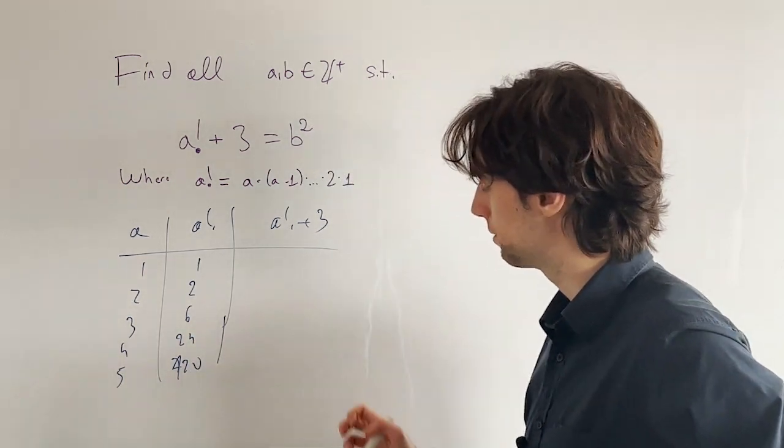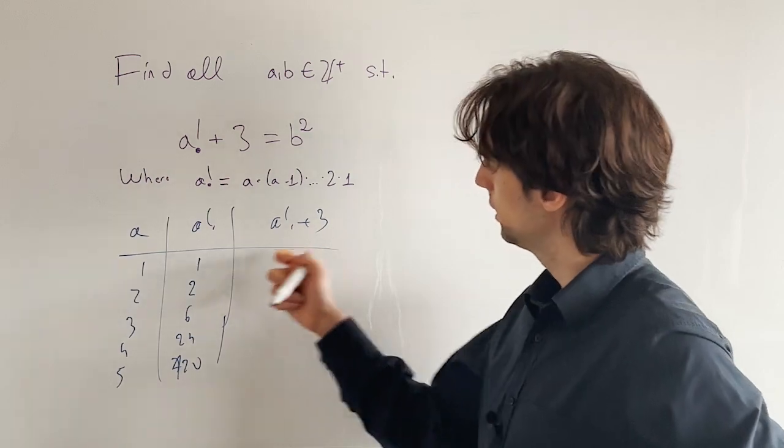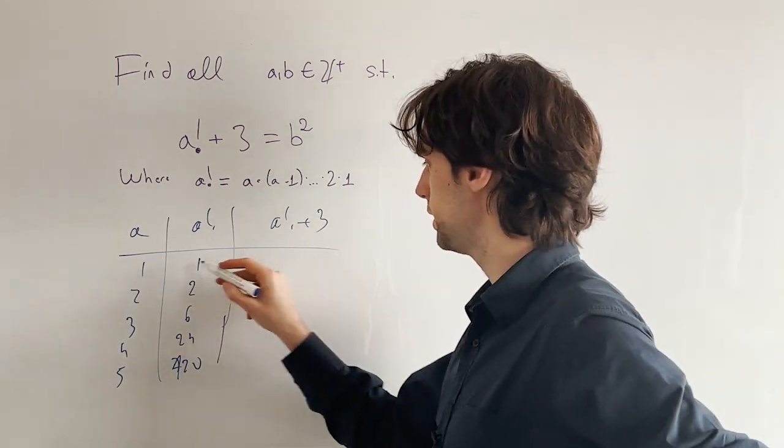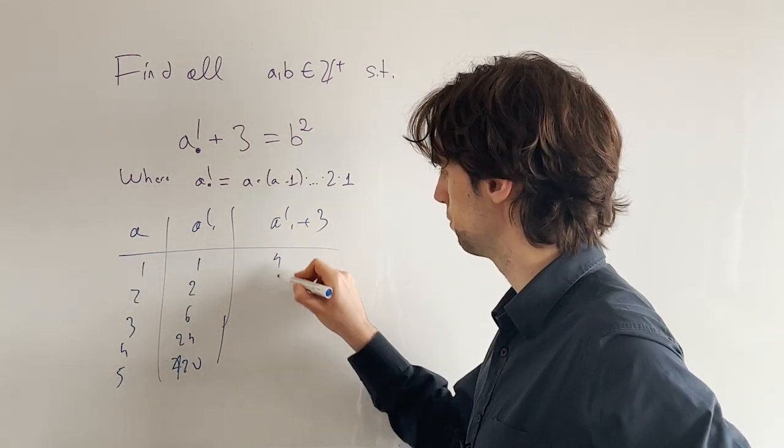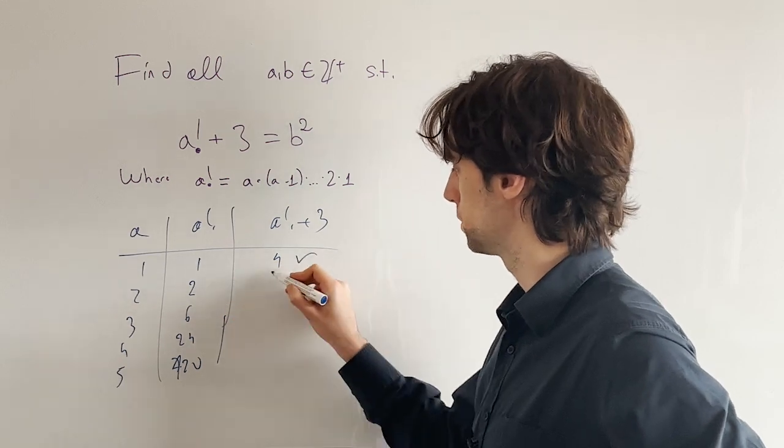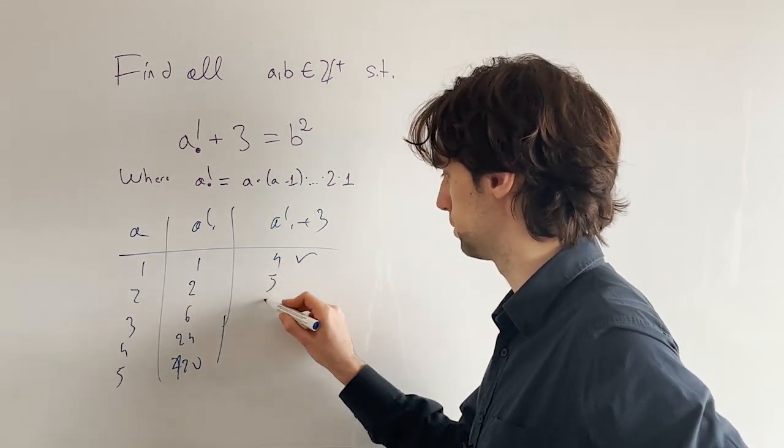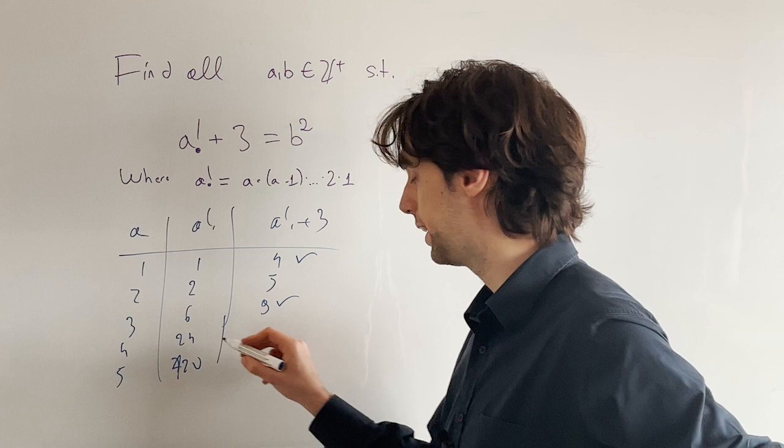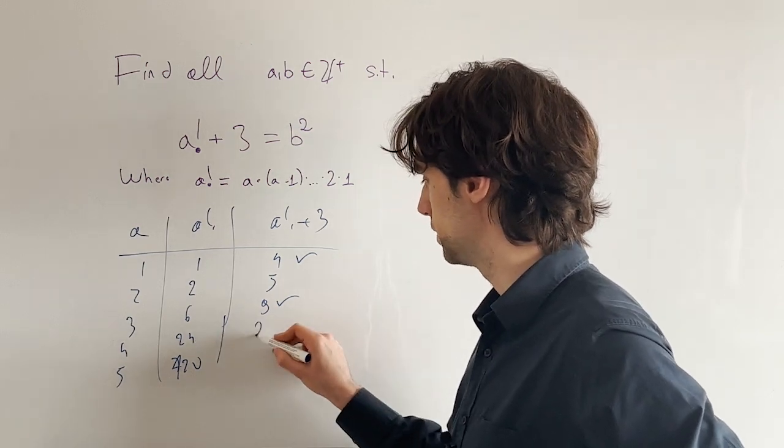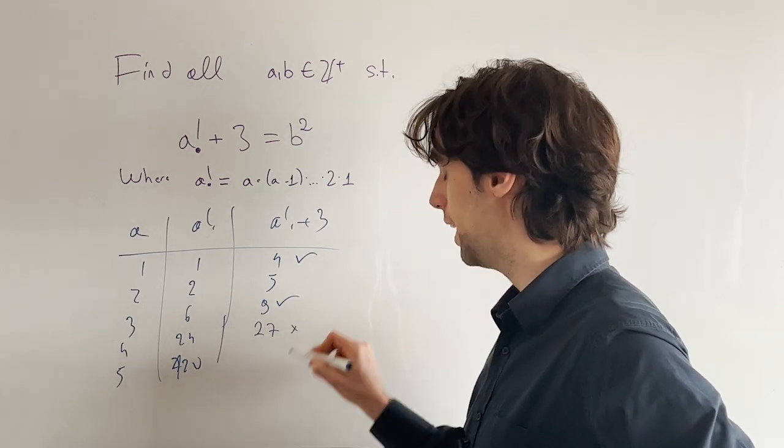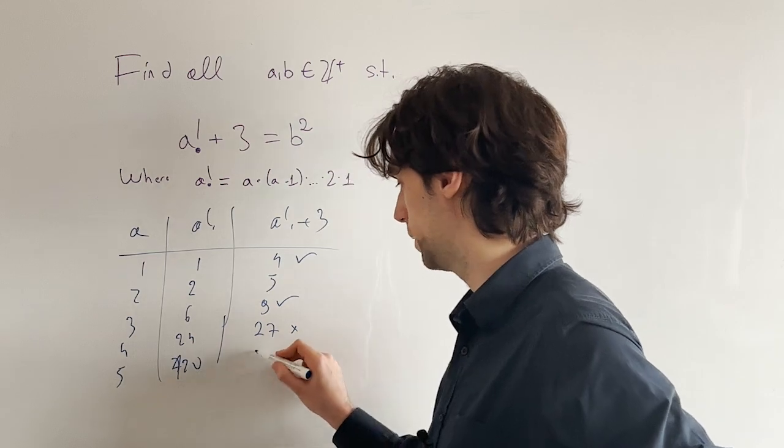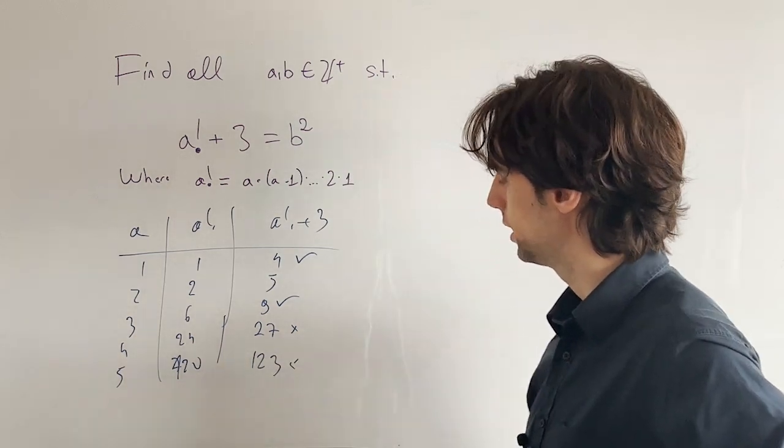And with that, we have the first couple of these written down. Now what is a factorial plus 3? Here we have 1 plus 3 is 4, it's a square. 2 plus 3 is 5, not a square. 6 plus 3 is 9, a square again. 24 plus 3 is 27, not a square. And 120 is 123, not a square.